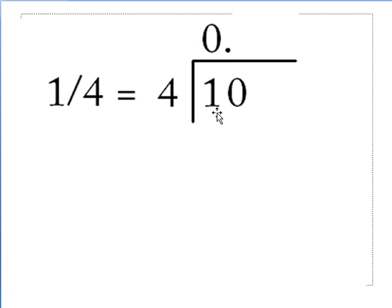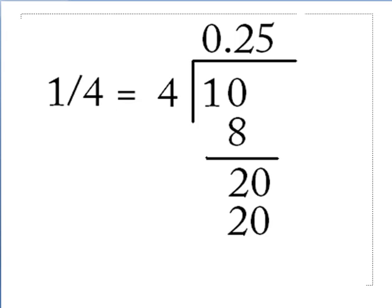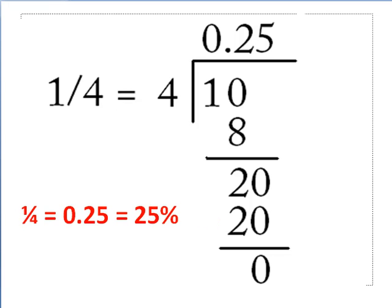And so then we come over here and we add a 0. And 2 times 4 is 8. We subtract the 8 from the 10, we wind up with 2. We know that 4 won't go into 2, so we add a 0. And 5 times 4 is 20. We subtract the 20 and we wind up with 0. So the answer that we got is 0.25 or 25% if we move the decimal two places.